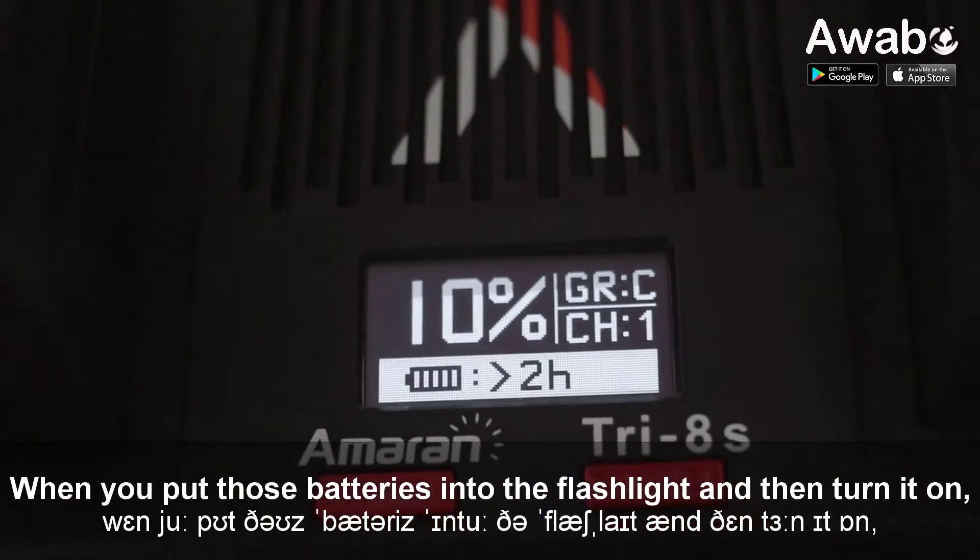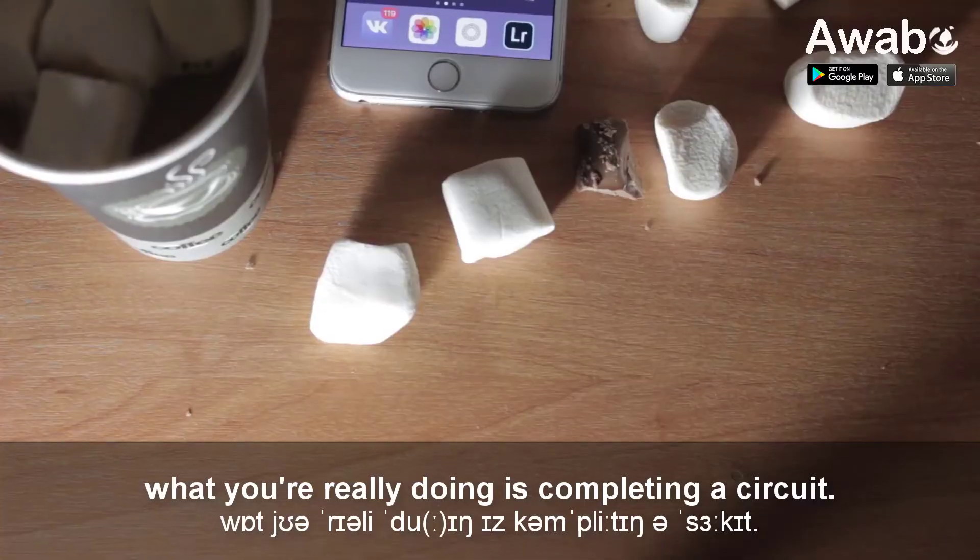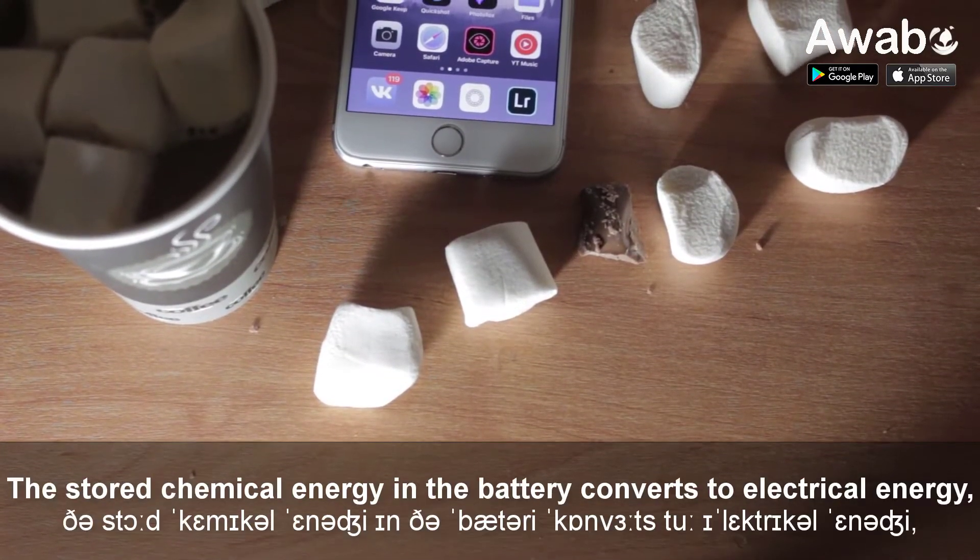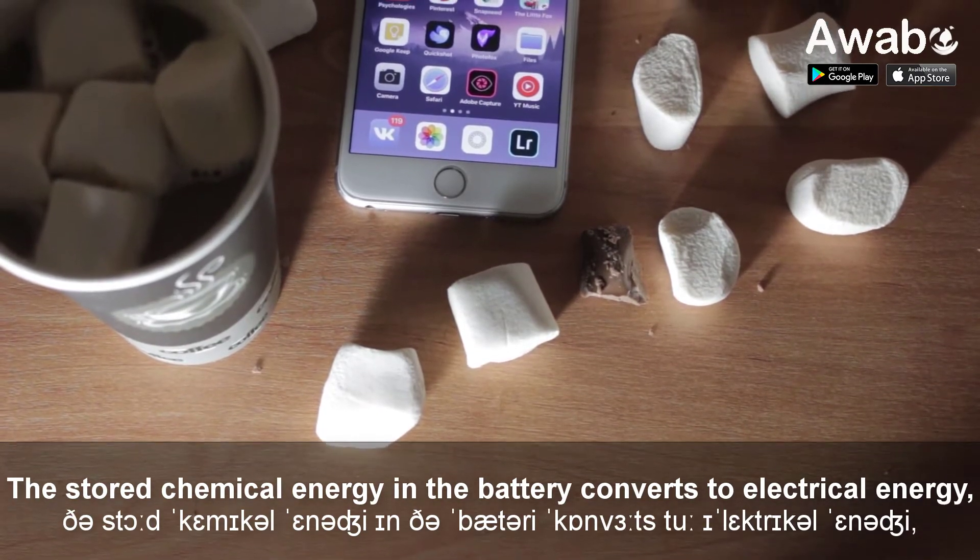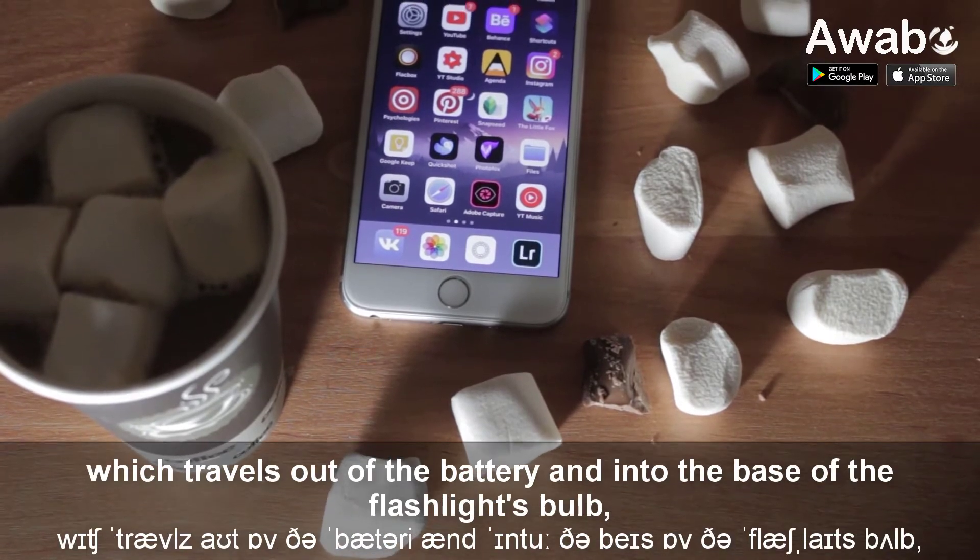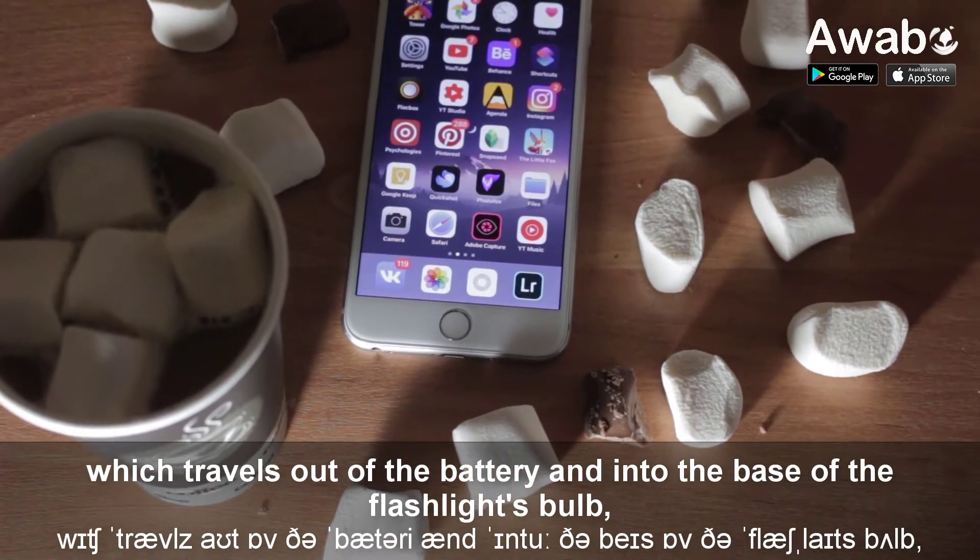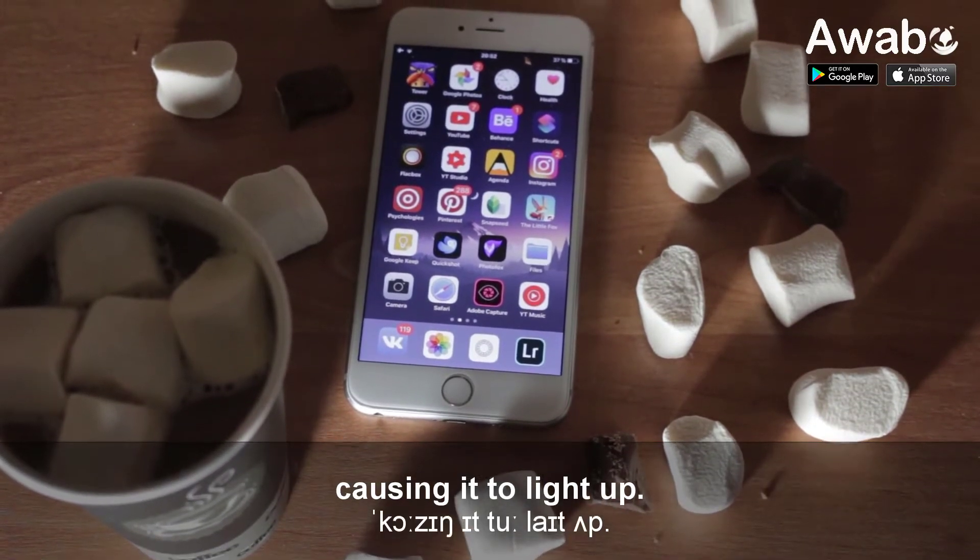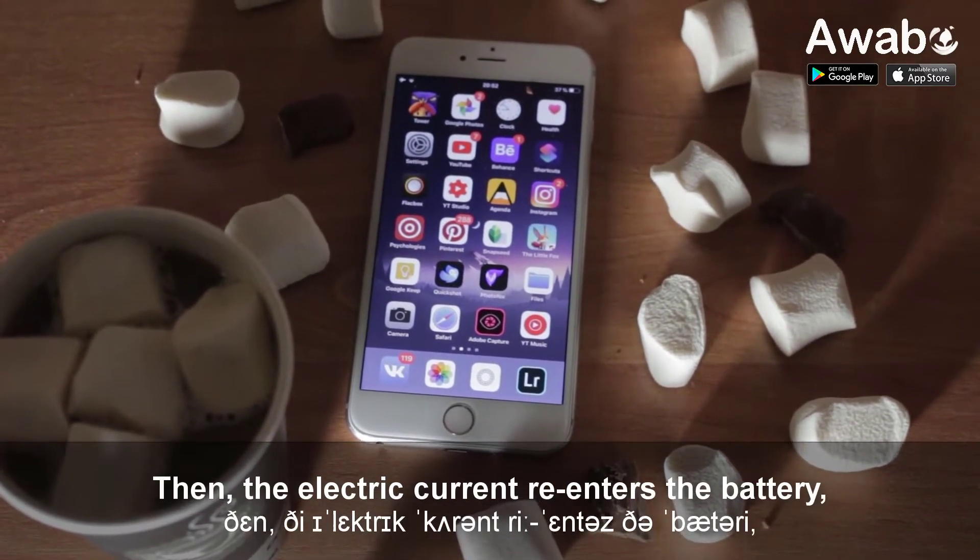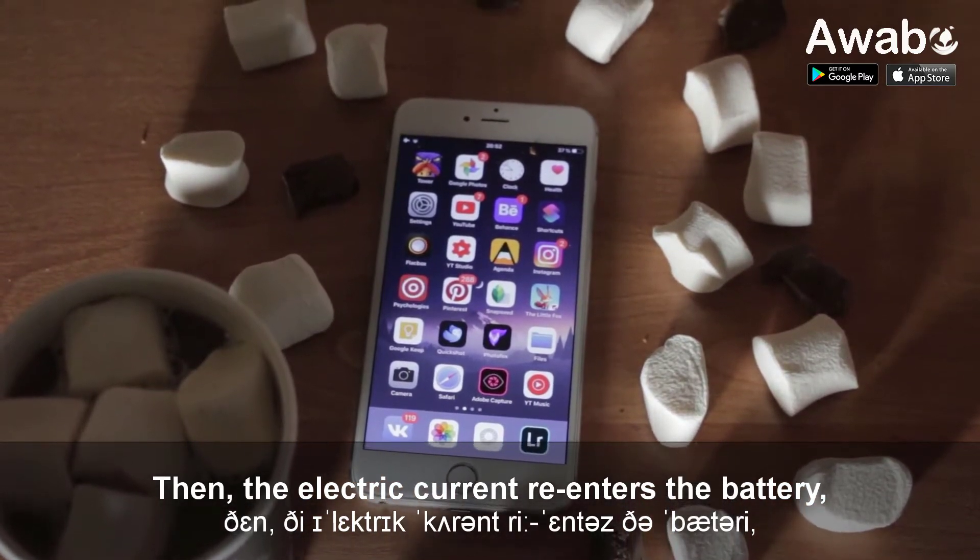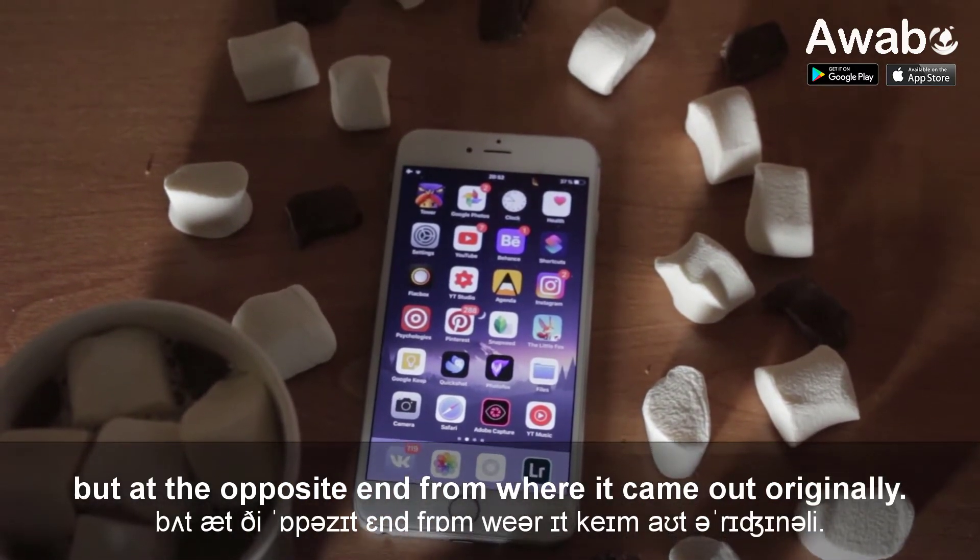When you put those batteries into the flashlight and then turn it on, what you're really doing is completing a circuit. The stored chemical energy in the battery converts to electrical energy, which travels out of the battery and into the base of the flashlight's bulb, causing it to light up. Then the electric current re-enters the battery, but at the opposite end from where it came out originally.